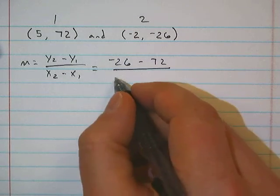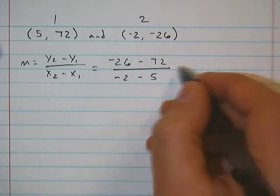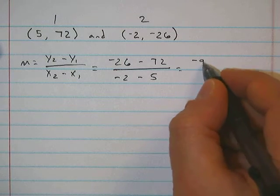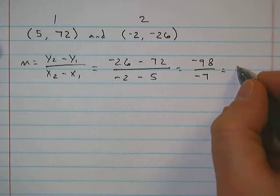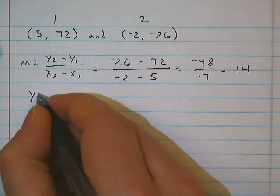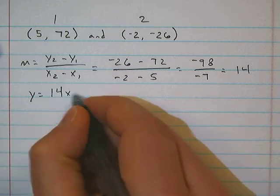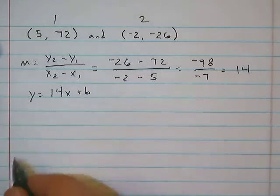I'm going to say this is 1 and that's 2. So negative 26 minus 72 over negative 2 minus 5. That's equal to negative 98 over negative 7, which reduces down to a positive 14.